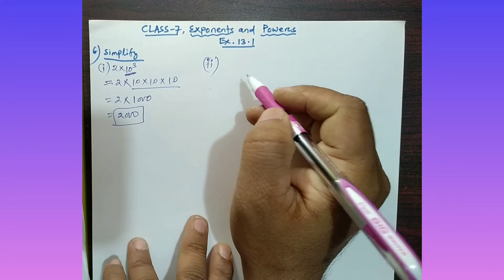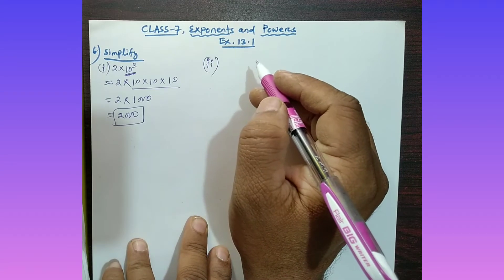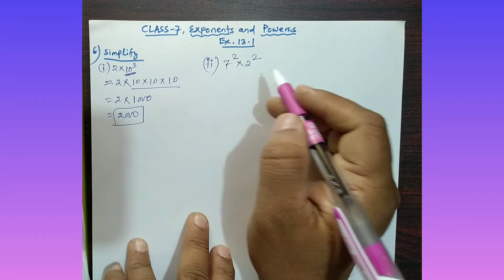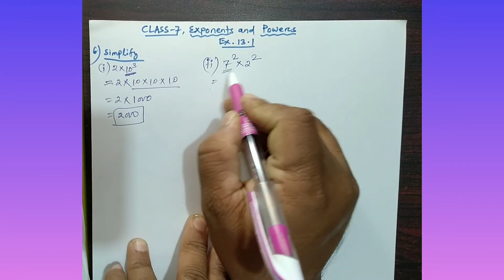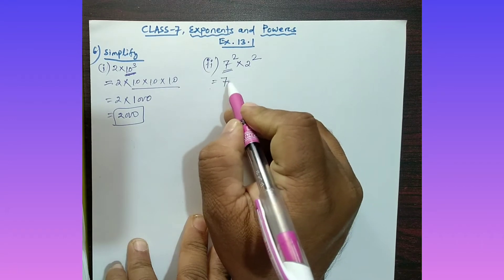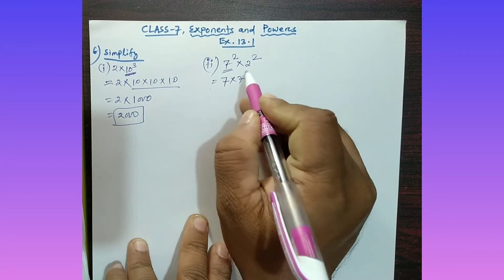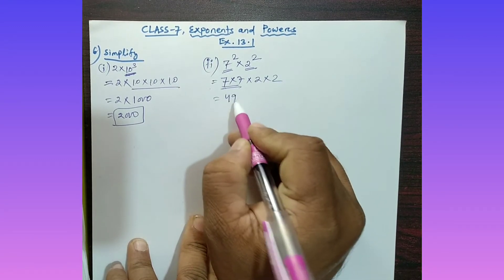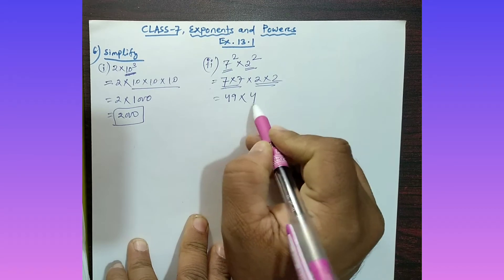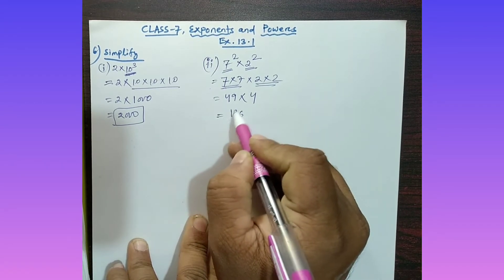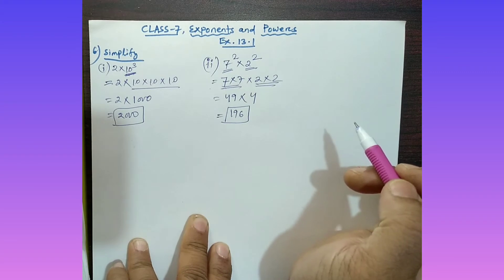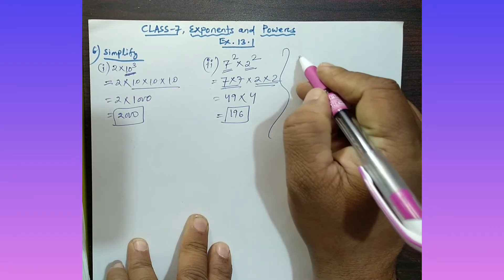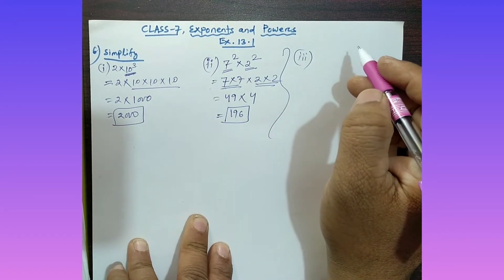Part (ii): Simplify 7 square into 2 square. Seven squared means 7 is multiplied two times, that is 7 into 7. Two squared means 2 is multiplied two times, that is 2 into 2. So 7 into 7 is 49, and 2 into 2 is 4. Therefore 49 into 4 equals 196. The answer is 196.